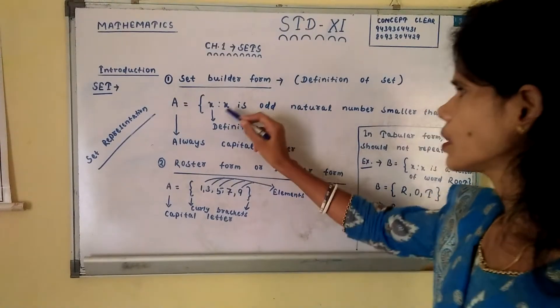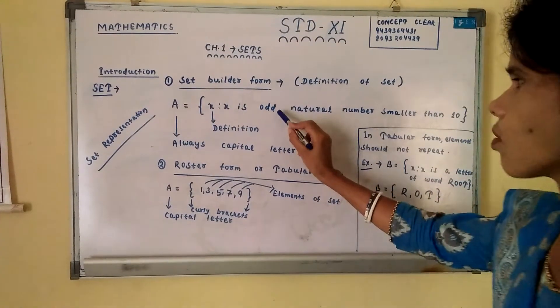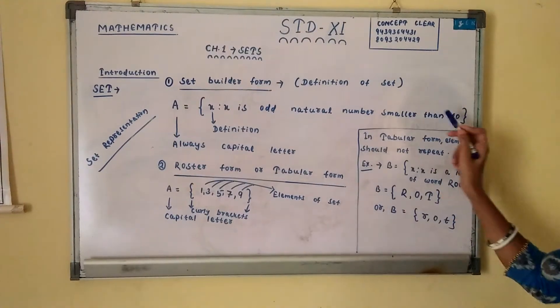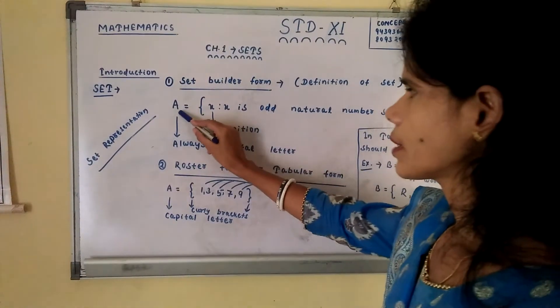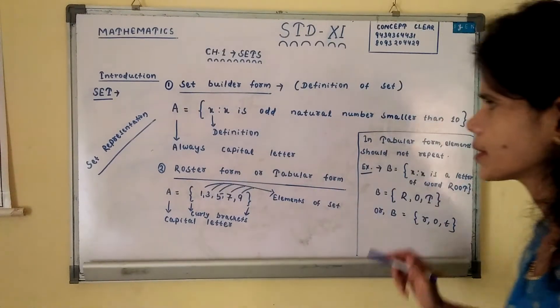What is the definition? x such that x is all natural numbers smaller than 10. Set always a in capital letters.